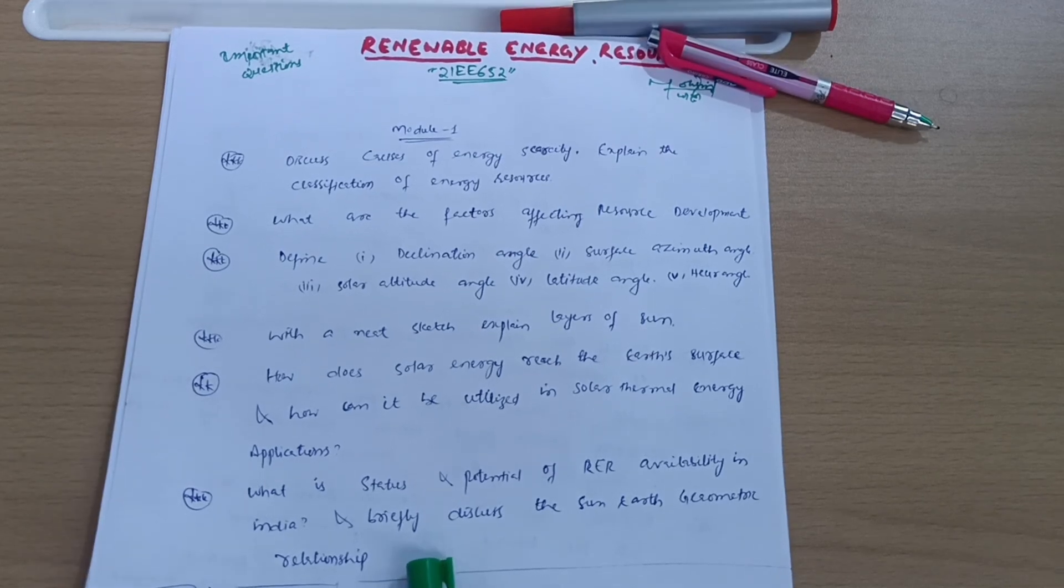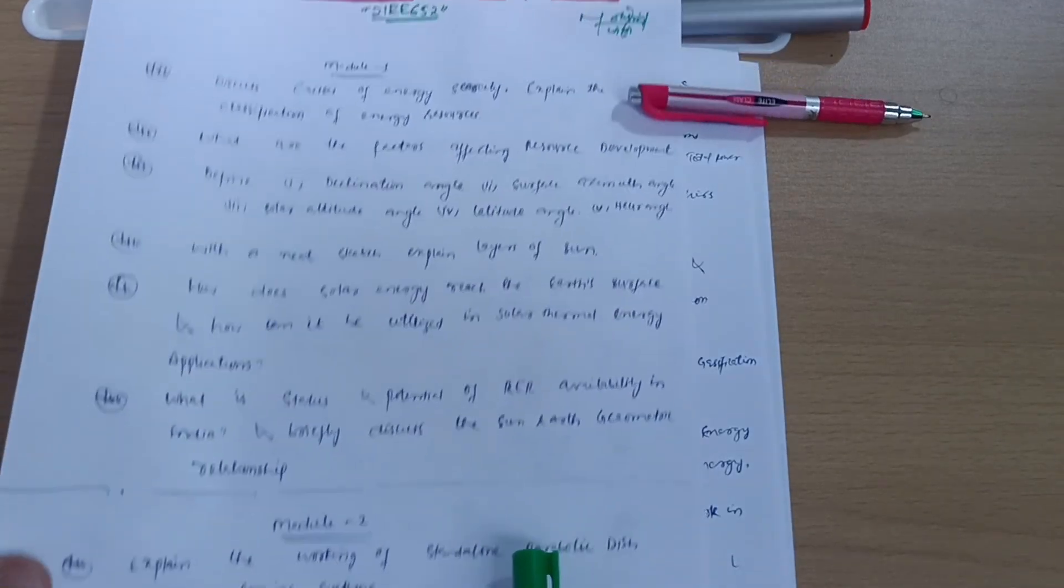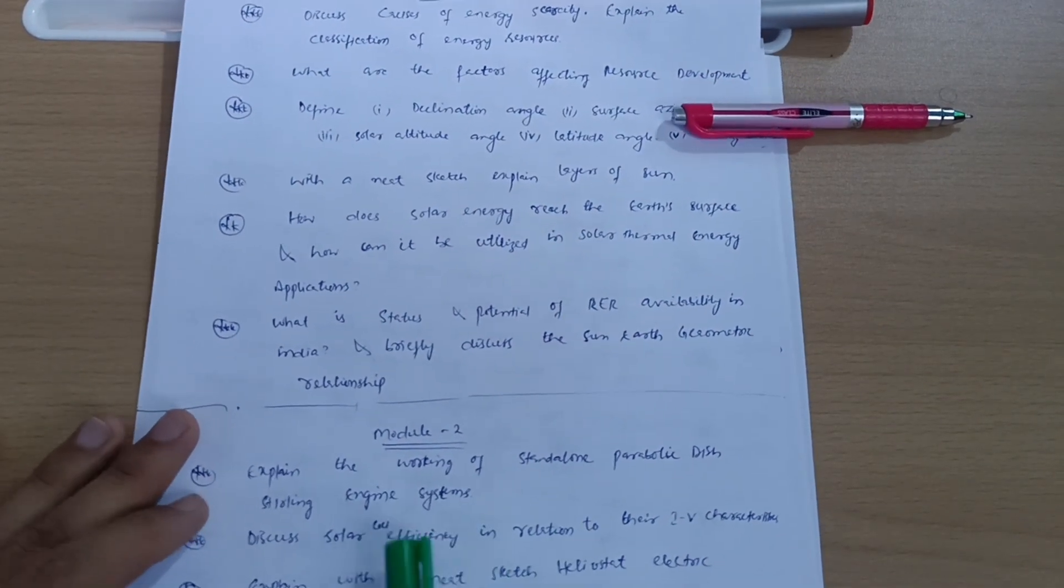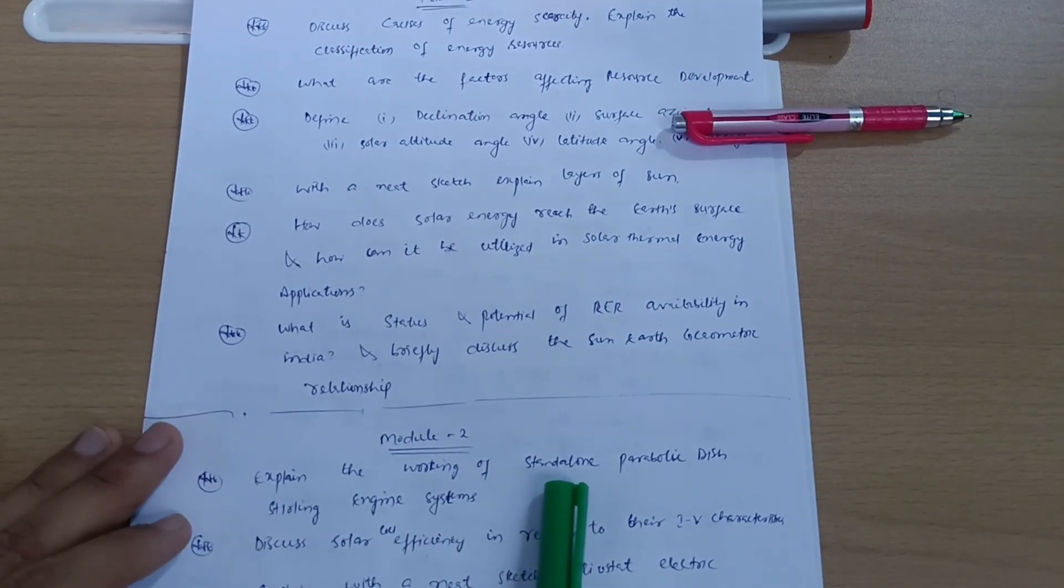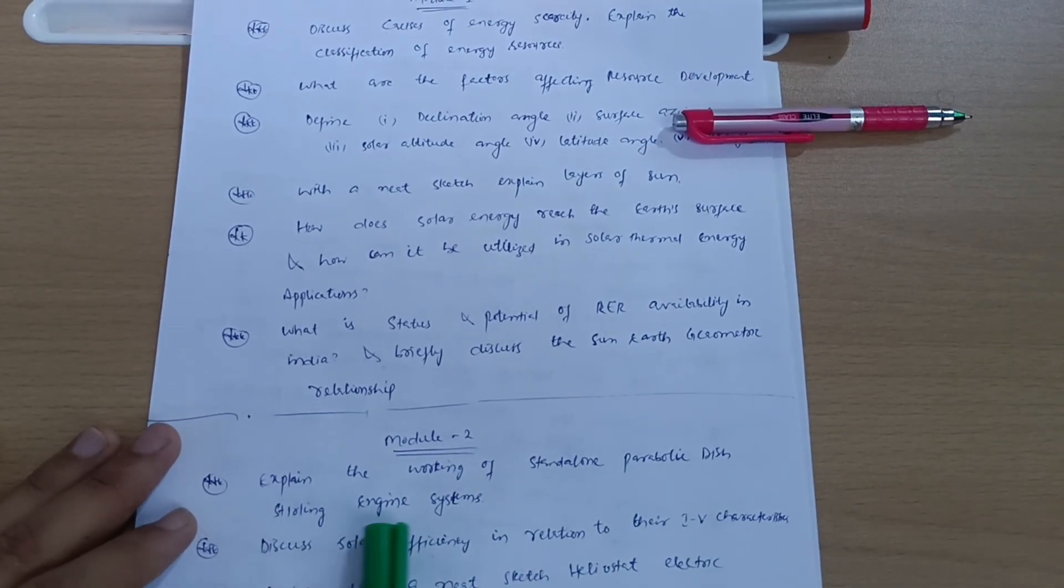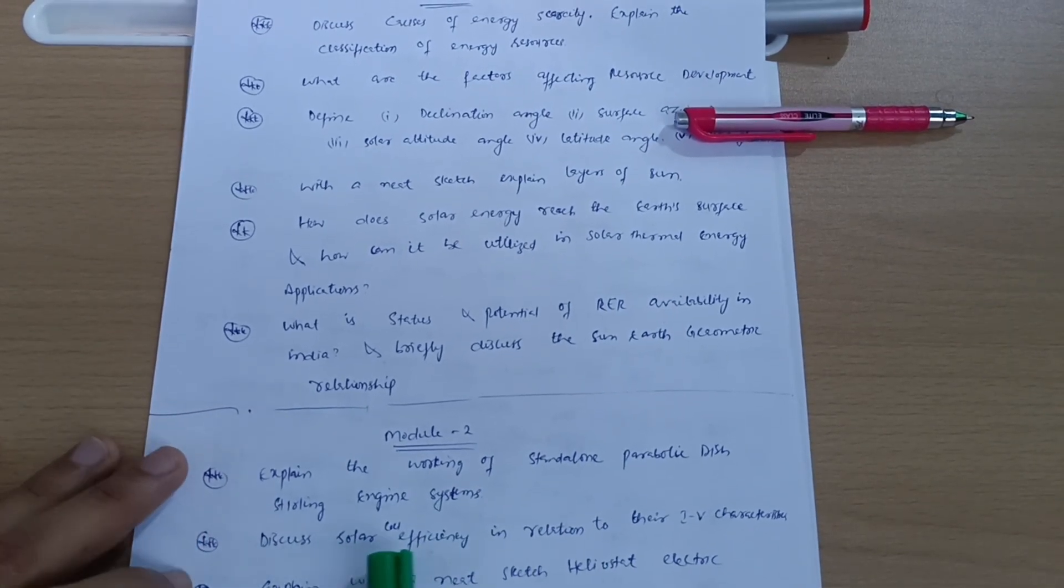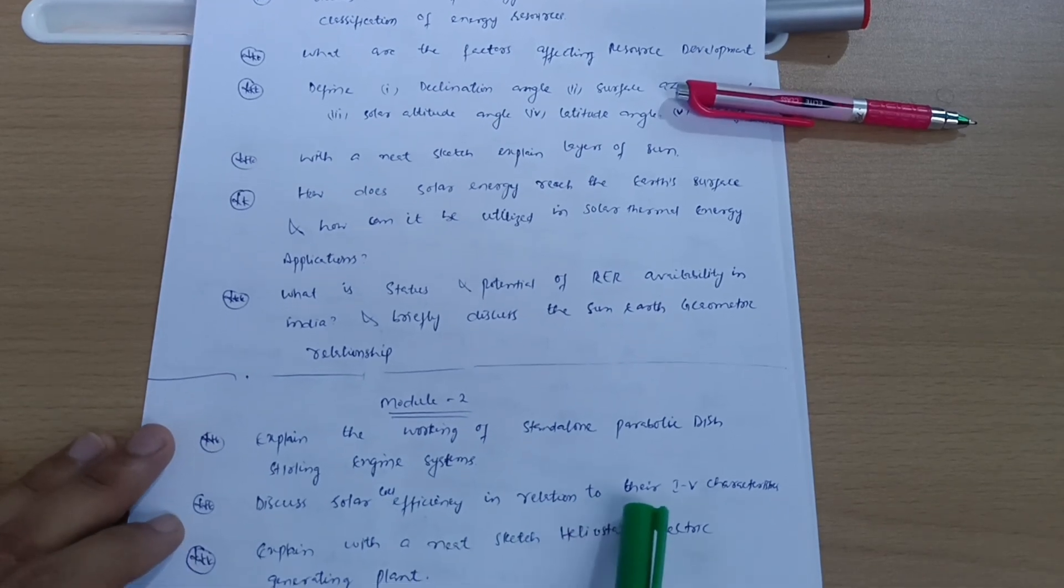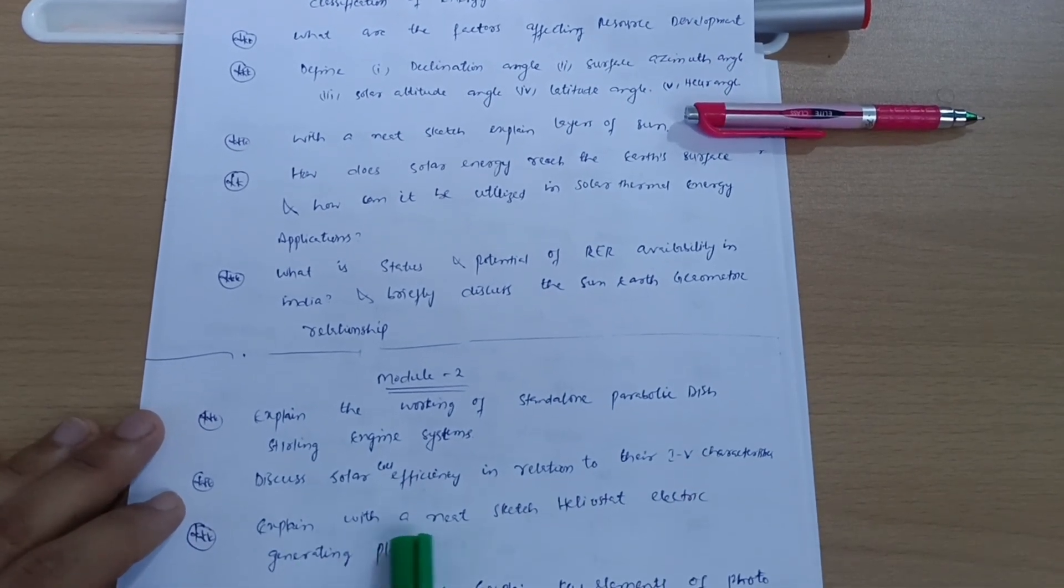Next we have Module 2, where you have to cover: Explain the working of standalone parabolic dish Stirling engine systems. Discuss solar cell efficiency in relation to their I-V characteristics.